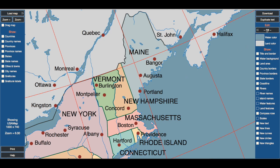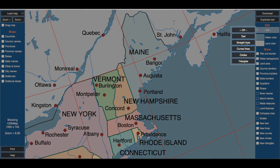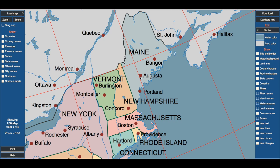First thing I'm going to do is add in my own city circles and put them right over the cities that I want. I'm going to do Augusta, Maine; Concord, New Hampshire; Boston, Massachusetts; Providence, Rhode Island; and Hartford, Connecticut. Those are the cities that we're going to be studying.